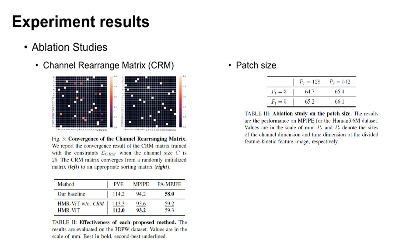Moreover, we performed an ablation study on the patch size used to divide the feature images. As shown in Table 3, lower errors are observed when PC, denoting the size of the channel dimension of the divided feature image, and PT, denoting the size of the time dimension of the divided feature image, have small values. This proves that dividing the feature image into smaller patches helps in modeling temporal and kinematic information.